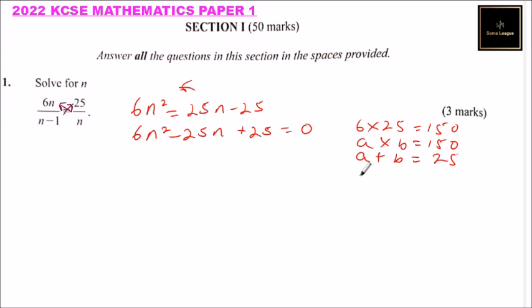So the two numbers we can say is minus 15 and minus 10. When you multiply minus 15 times minus 10, that will give us 150, because minus and minus is positive when you multiply. And when you add, minus 15 plus minus 10, that will give us minus 25. So we use these two numbers to modify our quadratic equation.